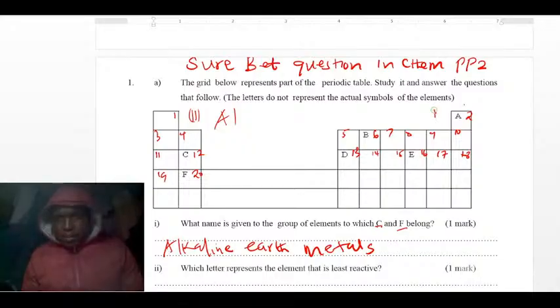Group 7 here. They are called halogens. They are halogens. So those are the things to note before.